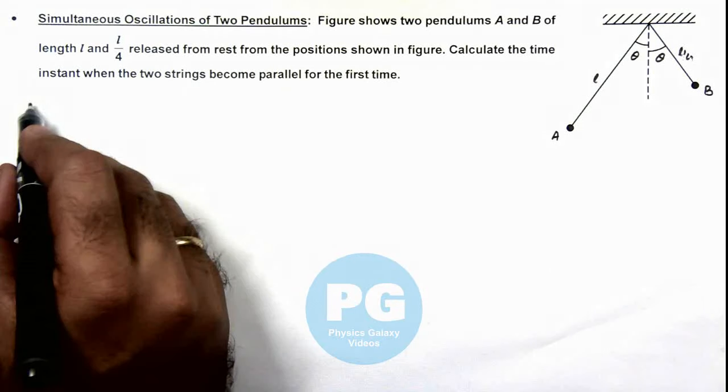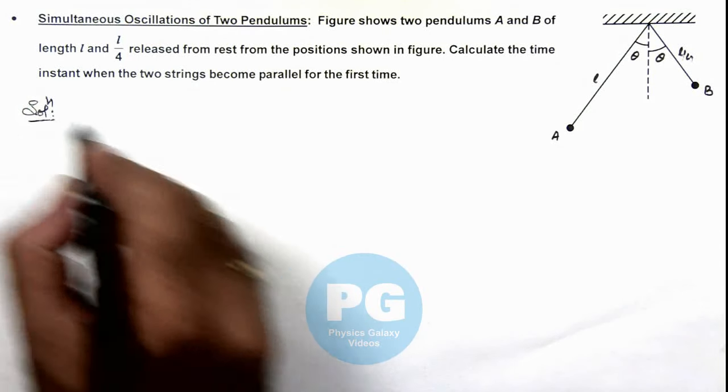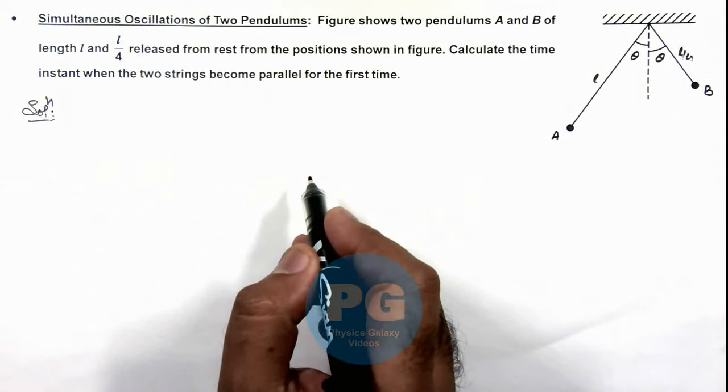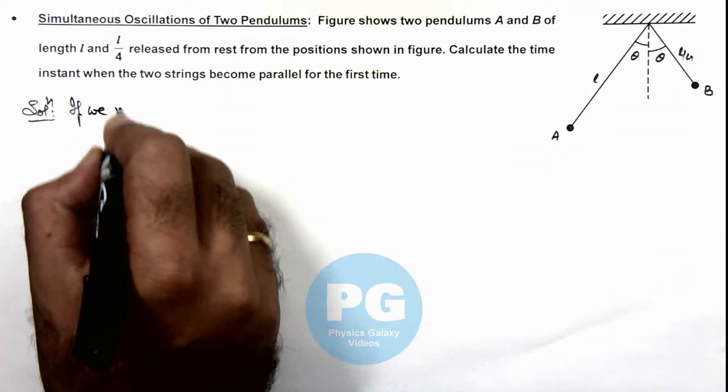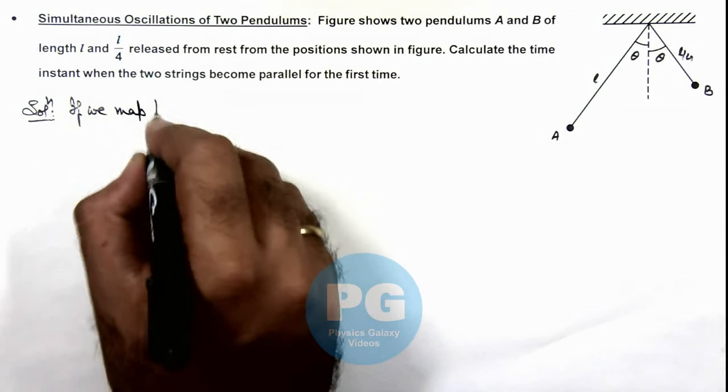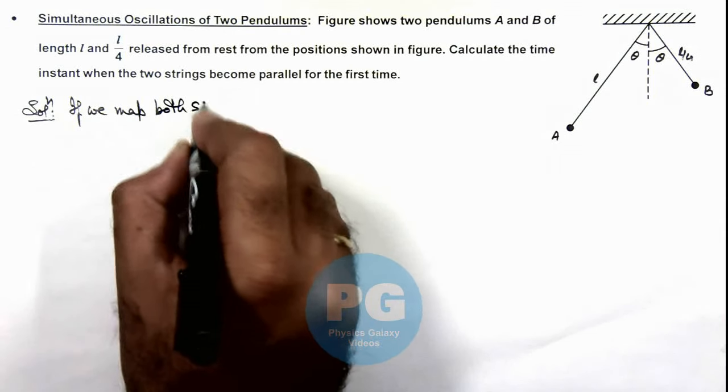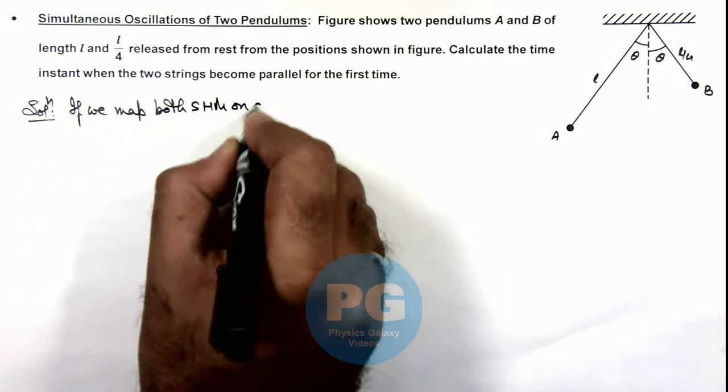Here we need to map the oscillations of these two pendulums on a circle. We can write if we map both simple harmonic motions on a circle